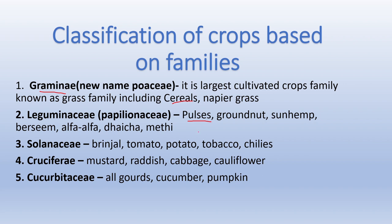Additionally, groundnut, sunhemp, berseem, alfa-alfa, dhaincha, and methi also fall under the Leguminosae family. The third family is Solanaceae, which includes brinjal, tomato, potato, tobacco, and chili. Fourth is Cruciferae family, which includes mustard, radish, cabbage, and cauliflower.